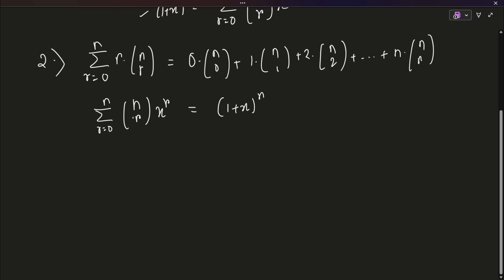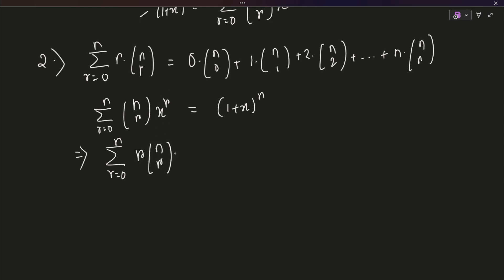Since x is a variable and both sides are finite, we can differentiate with respect to x. Nothing else changes — we simply differentiate x^r with respect to x and everything else remains as it is. So according to the rule, this gives r·x^(r−1) on the left side. Now you have an r inside the summation, which otherwise would not have been possible any other way — you cannot simply introduce r into a summation. On the right-hand side, you get n·(1+x)^(n−1). Put x=1 to get the identity you want.